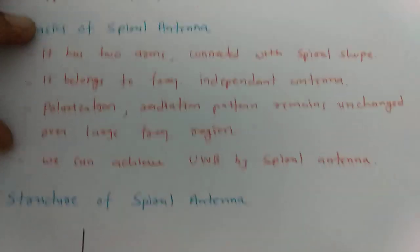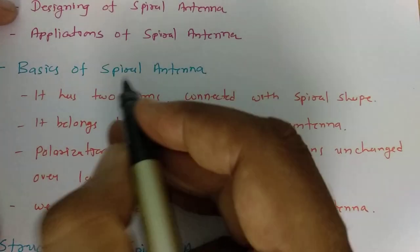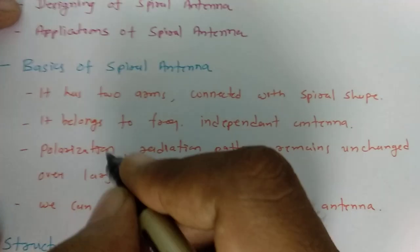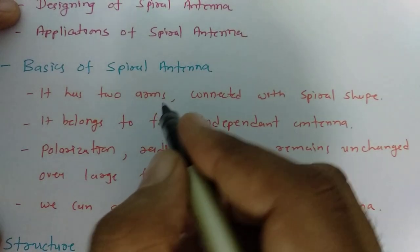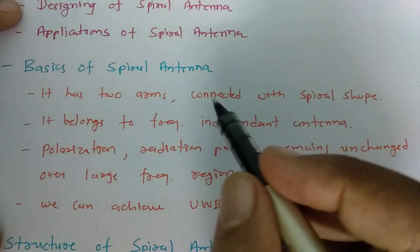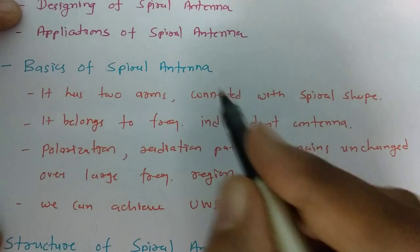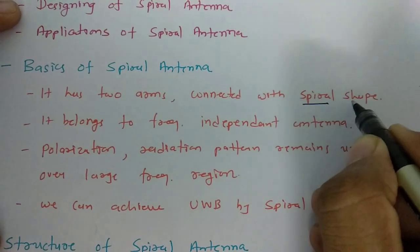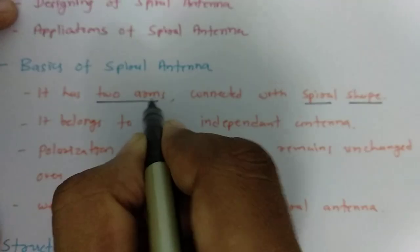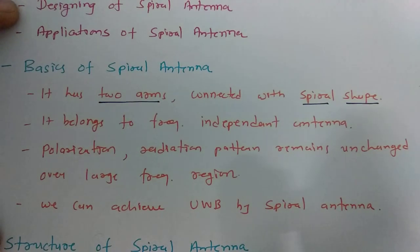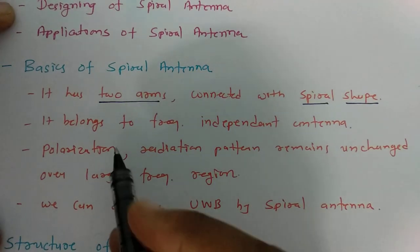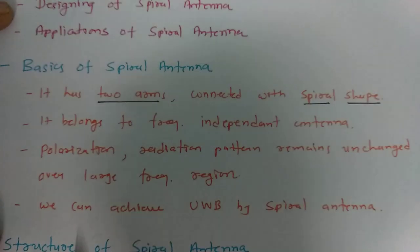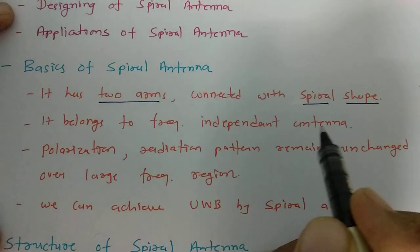Let us begin with the basics of spiral antenna. Spiral antenna has two arms, similar to a dipole antenna, connected in a spiral shape. When we talk about spiral antenna, it belongs to the frequency independent antenna family.